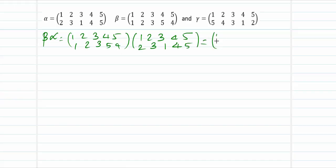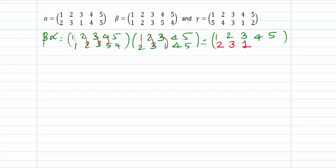We will see the answer: 1 maps to 1 in beta, and 1 maps to 2 in alpha, so 1 maps to 2. 2 maps to 2 in beta, and 2 maps to 3 in alpha, so 2 goes to 3. 3 maps to 3 in beta, and 3 maps to 1 in alpha, so 3 goes to 1. 4 maps to 5 in beta, and 5 maps to 5 in alpha, so 4 goes to 5. 5 maps to 4 in beta, and 4 maps to 4 in alpha, so 5 maps to 4. So beta alpha = (1, 2, 3, 4, 5) → (2, 3, 1, 5, 4).